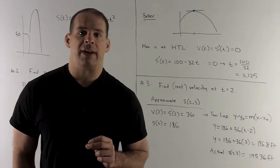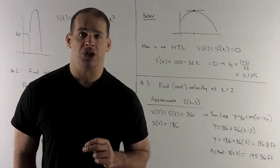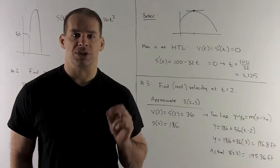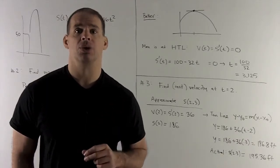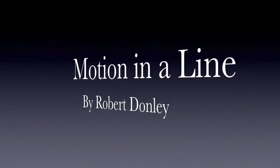We check against the actual value. I get that by taking 2.3, put it into the position function. That's going to give me 195.36 feet. So we see our approximation is pretty close. Here we go. Thank you.